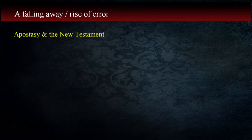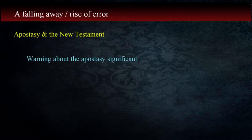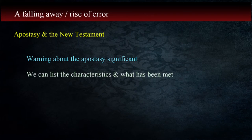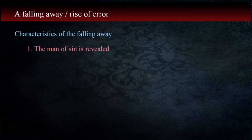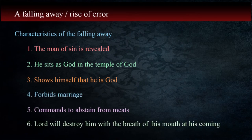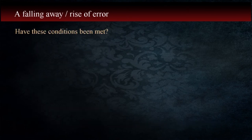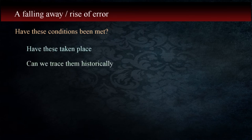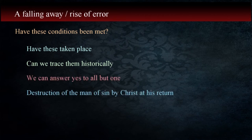This has been a lengthy discussion but it's a significant point dealt with in the New Testament. As far as prophecies go, we can list the apostasy as one of the primary warnings. We can now list all of the characteristics of the falling away and see for ourselves if these conditions have been met and therefore fulfilled: the man of sin is revealed, he sits as God in the temple of God, shows himself that he is God, forbids marriage, commands to abstain from meats, and the Lord will destroy him with the breath of his mouth at his coming. The answer is yes to all but one — the final prophecy not yet fulfilled is the destruction of the man of sin by Christ at his return, which leads us to the second coming of Christ.